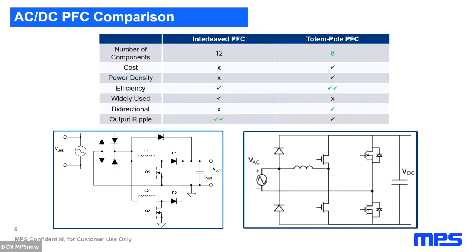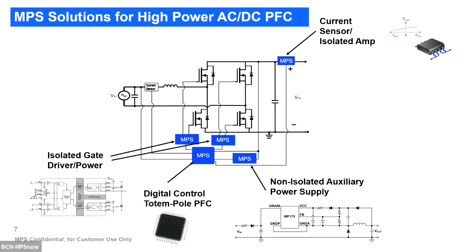The totem pole PFC has an inherent DC-AC behavior, so without changing the topology we can implement a bidirectional option. Interleaving PFC, which is mainly two boost converters in an interleaving configuration, has lower ripple because the two current sources are in parallel — with the same capacitor we get less ripple. This is our solution, our reference design, and we have a broad set of DC-DC solutions inside this application.